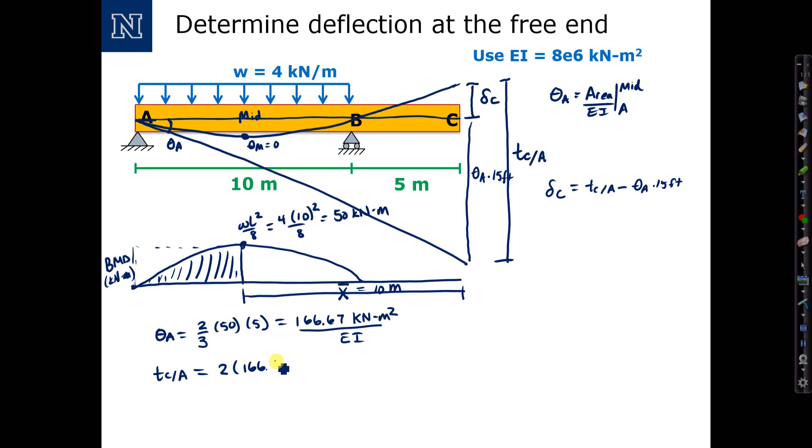And then times the x bar which is 10 meters, that's the x distance, and that computes to 3333 kilonewton meters cubed, and then of course we'll need to divide that by EI.